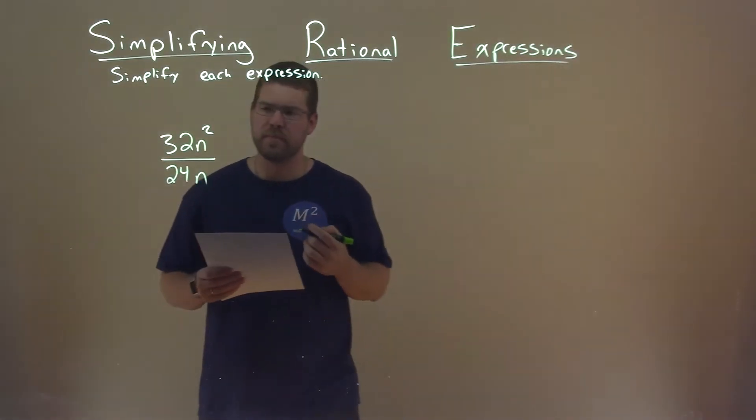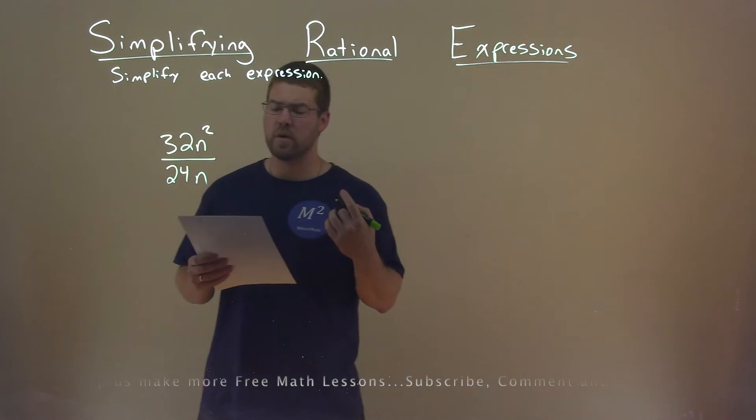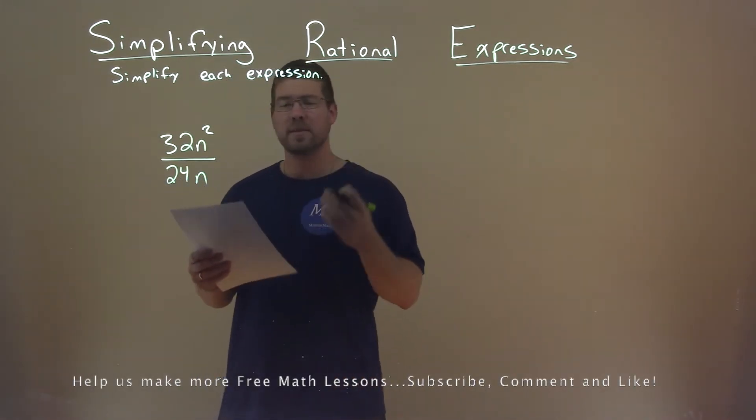We're given this problem right here, 32n squared over 24n, and we want to simplify this expression.